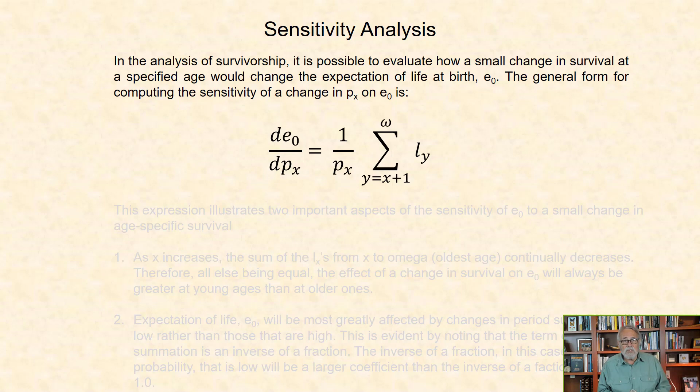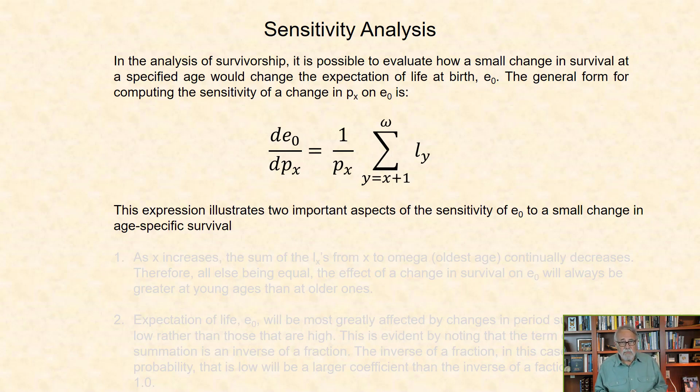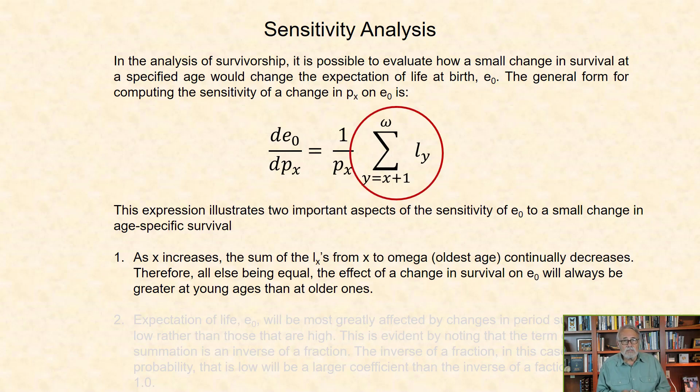Thus, the change in E0 relative to a change in PX equals the product of the inverse of age-specific survival at age X, and the sum of the LX values beyond age X. This expression illustrates two important aspects of the sensitivity of E0 to a small change in age-specific survival. First, as X increases,